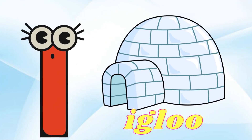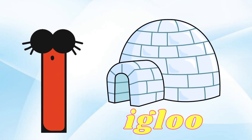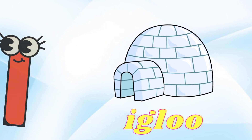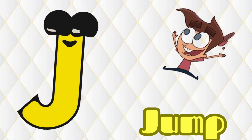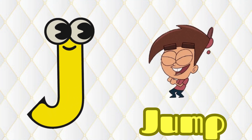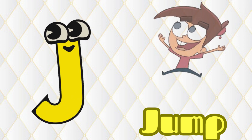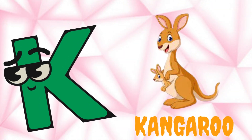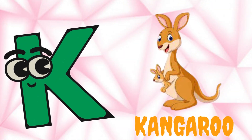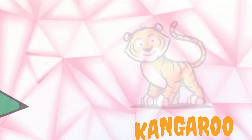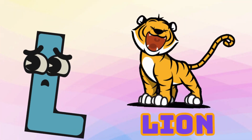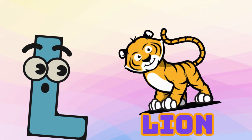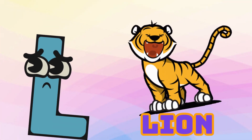I is for Igloo, I-I-Igloo. J is for Jump, J-J-Jump. K is for Kangaroo, K-K-Kangaroo. L is for Lion, L-L-Lion.